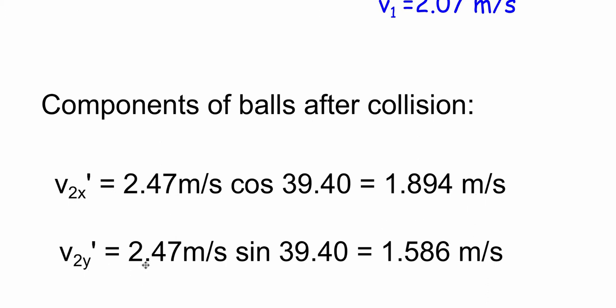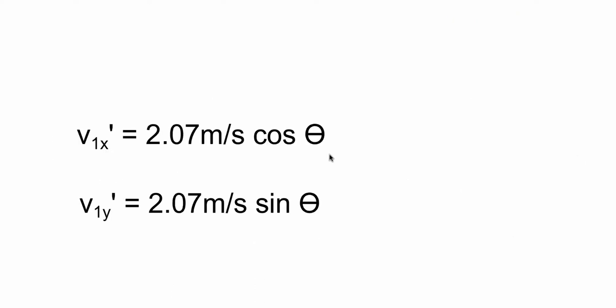The y component of the billiard ball, or ball two, is 2.47 meters per second times the sine of 39.4, which gives us 1.586.